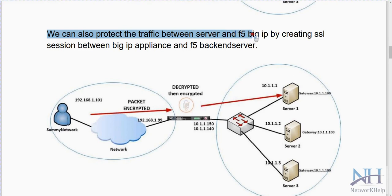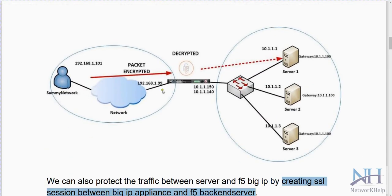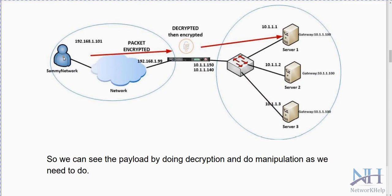We can also protect the traffic between the server and F5 Big IP by creating an SSL session between the Big IP appliance and the backend server. So earlier it was just between client and server; now it is client to F5, and F5 to backend server. This is the beauty of the SSL profile — your packet will be encrypted on both sides. In most scenarios we encrypt the client-to-F5 session only.